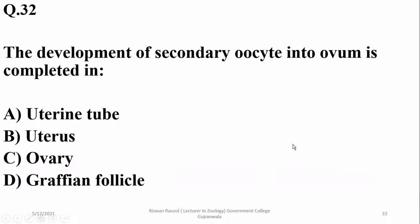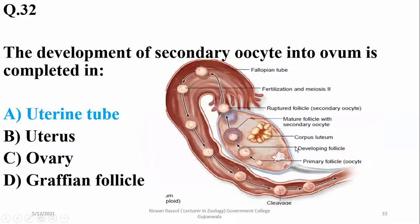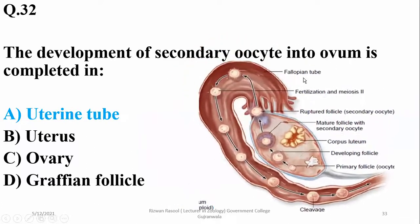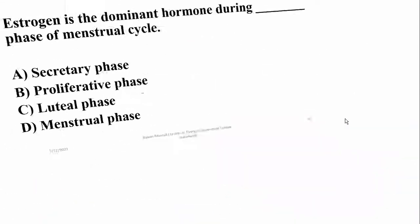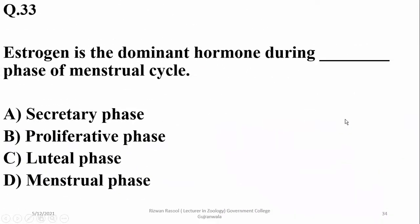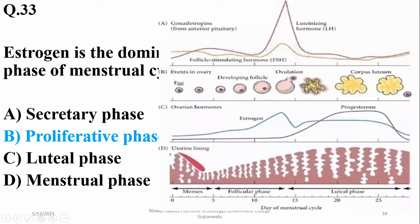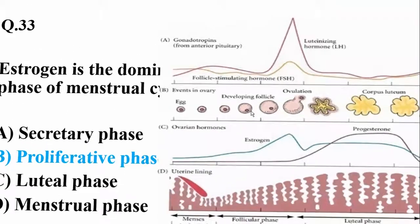Question number thirty-two: the development of the secondary oocyte into an ovum is completed in the uterine tube, where fertilization takes place and converts the secondary oocyte into the final ovum. Question number thirty-three: estrogen is the dominant hormone during the proliferative or initial phase of the menstrual cycle.